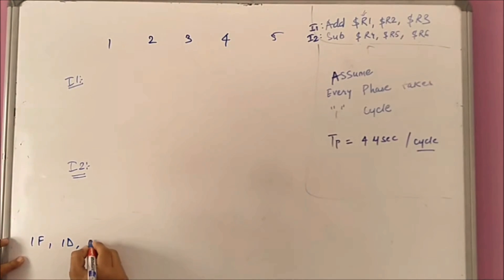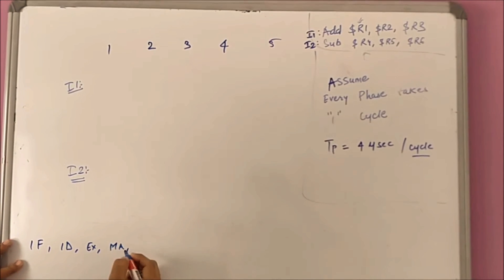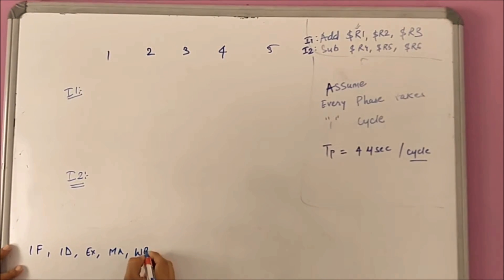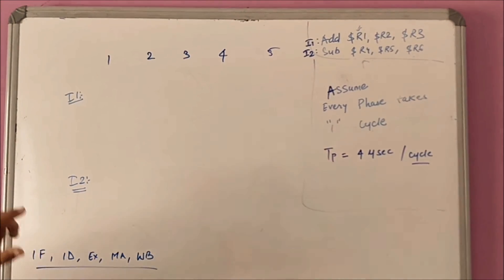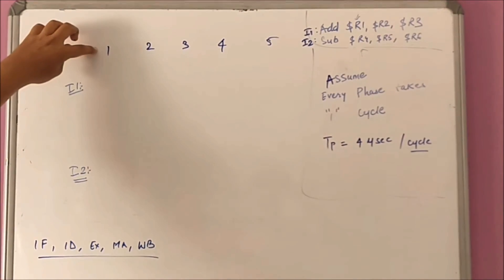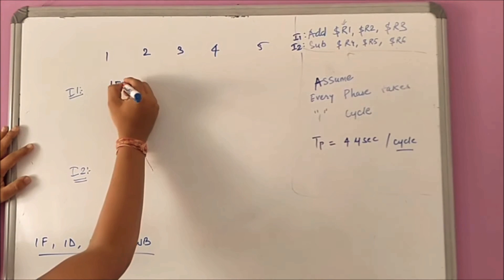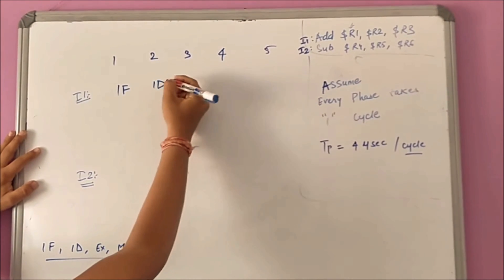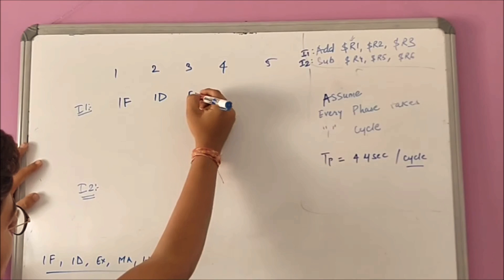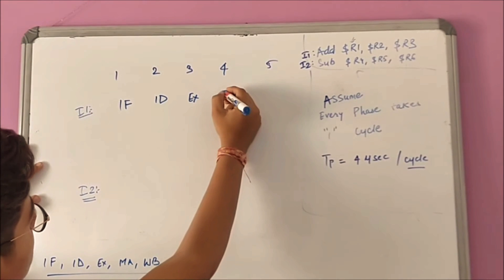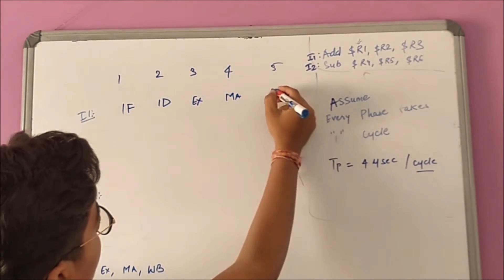For I1 there will be five phases: instruction fetch, instruction decode, execution, memory access, and write back. So there will be five cycles total. In the first cycle it will be instruction fetch, second cycle instruction decode, third cycle execution, fourth cycle memory access, and fifth cycle write back.